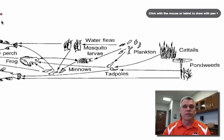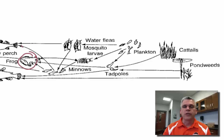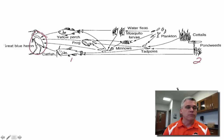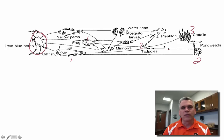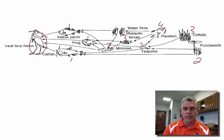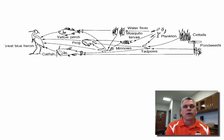There are tertiary consumers on here as well. For instance, the frog would be a tertiary consumer because it ate the minnows that ate the mosquito larvae that ate the plankton. But let's look at something complex, like the great blue heron. The great blue heron is a secondary consumer if it ate the catfish that ate the pondweeds. It would be a tertiary consumer if it ate the frog that ate the tadpoles that ate the cattails. It can also be a quaternary consumer if it eats the yellow perch that ate the minnows that ate the mosquito larvae that ate the plankton.